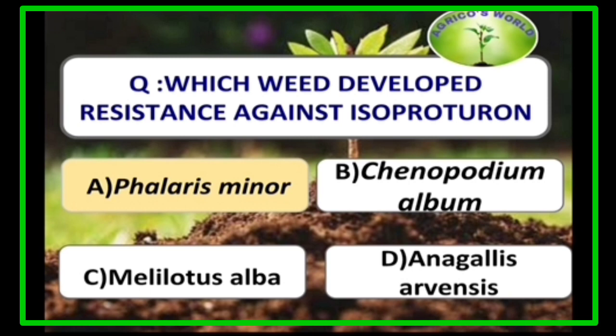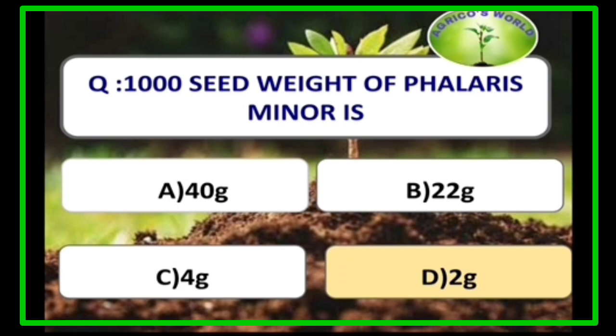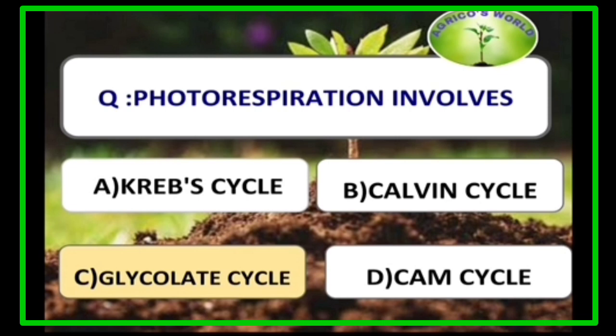Phalaris minor is the weed that developed resistance against isoproturon, discovered by Thurston. Because of this resistance, sulfosulfuron is now used for weed control. A non-selective translocated herbicide is glyphosate; its trade name is Glyphos-41. Thousand seed weight of Phalaris minor is 2 grams. Thousand seed weight is the test weight, and 100 seed weight is the seed index.